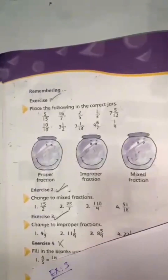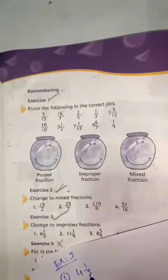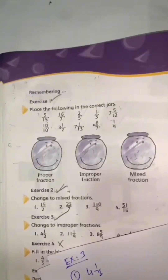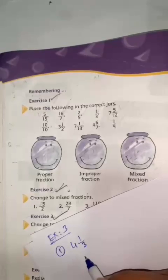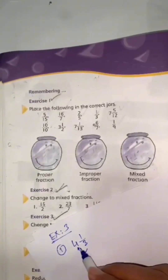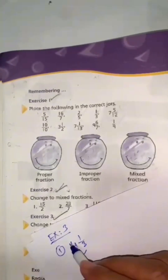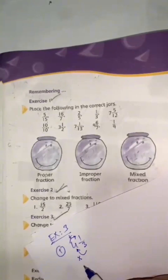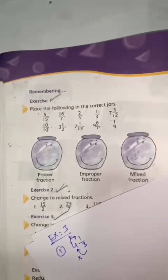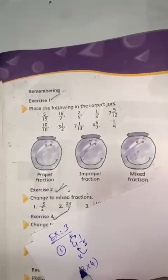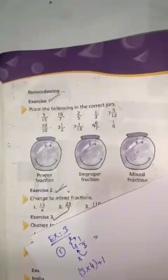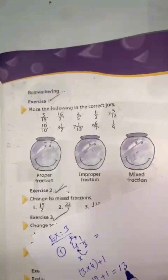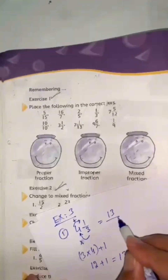Question number 1: 4 whole number 1 by 3. This is a mixed fraction and we need to convert it to an improper fraction. The easiest method is to multiply the whole number by the denominator and add the numerator. So 3 multiply by 4 plus 1: 3 times 4 is 12, plus 1 equals 13. So the answer is 13 by 3.